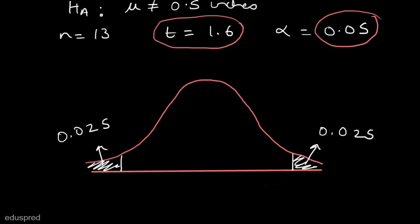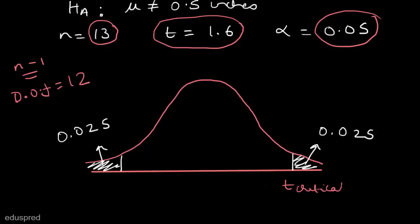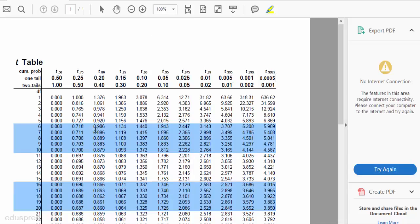We are given that n is equal to 13, and in the case of a t-distribution the degrees of freedom are n minus 1. So the degree of freedom is equal to 13 minus 1, which is equal to 12. Let's call this value t-critical and this value minus t-critical. Let's have a look at our t-table to find this t-critical value — this is how our t-table looks.